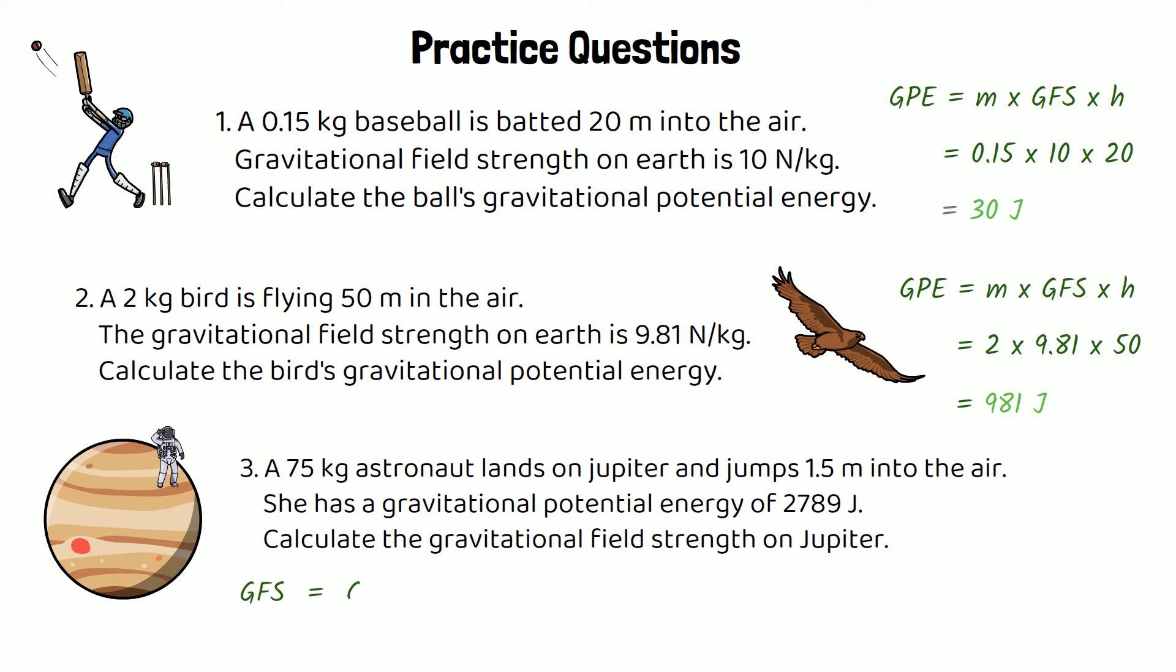Now for the last one, if we rearrange the equation for gravitational field strength, we get gravitational field strength equals GPE over mass times height. So you need to rearrange the equation to get that. GPE is 2,789 and mass times height would be 75 times 1.5. If we put that into our calculator, we will get a gravitational field strength of 24.8 newtons per kilogram. Might be slightly different if you haven't rounded on your calculator.